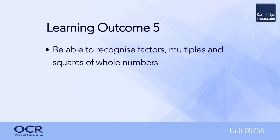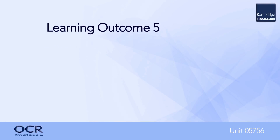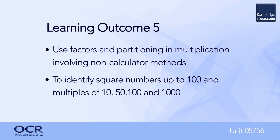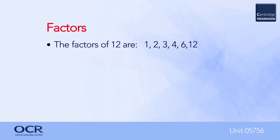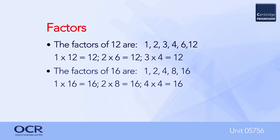For learning outcome five, learners must be able to recognise factors, multiples and squares of whole numbers. This learning outcome contains two parts: first, to use factors and partitioning in multiplication involving non-calculator methods; and second, to identify square numbers up to one hundred and multiples of ten, fifty, one hundred, and one thousand. Learners must understand the difference between factors and multiples. Factors are numbers that divide into other numbers — for example, the factors of twelve are one, two, three, four, six and twelve; and the factors of sixteen are one, two, four, eight and sixteen.